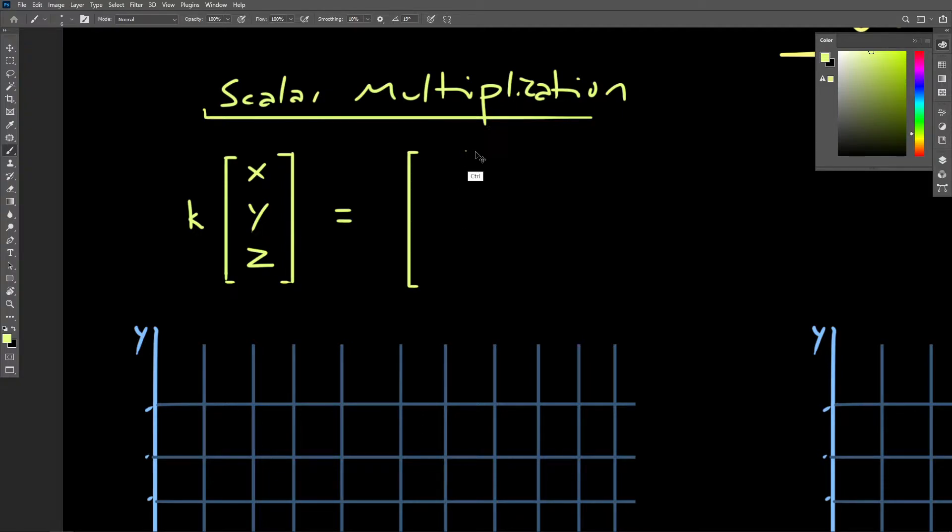Visually, this results in the magnitude of the vector changing. The direction is going to remain the same. Scalar division will also work in the same way.